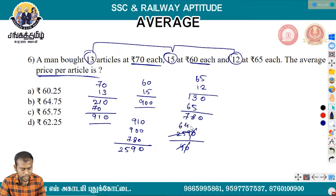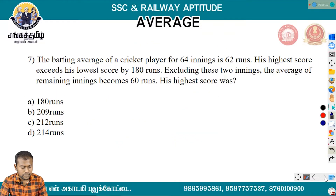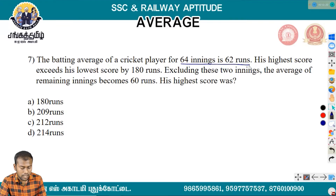The average price per article is 2,590 divided by 40, which equals 64.75.